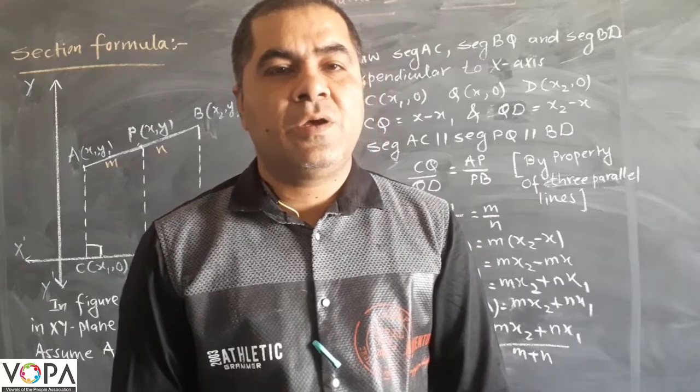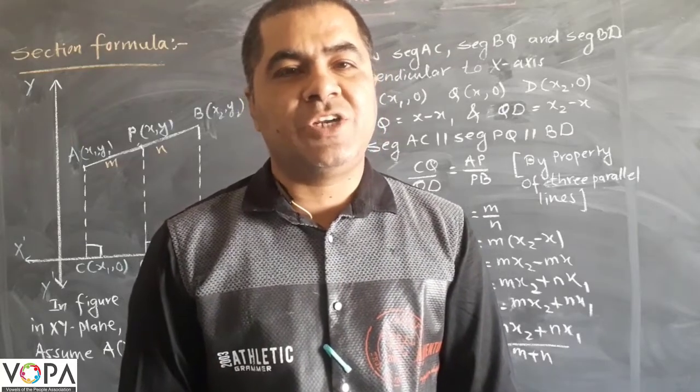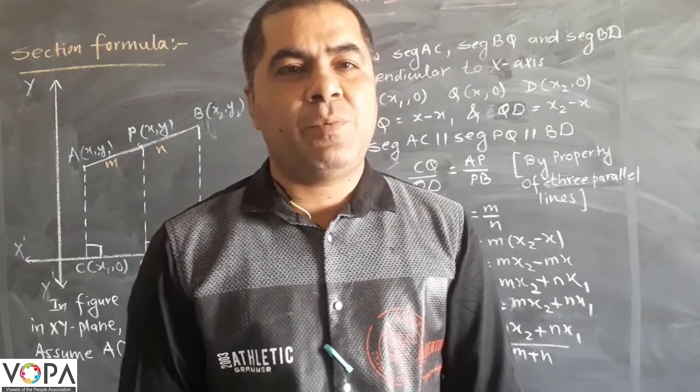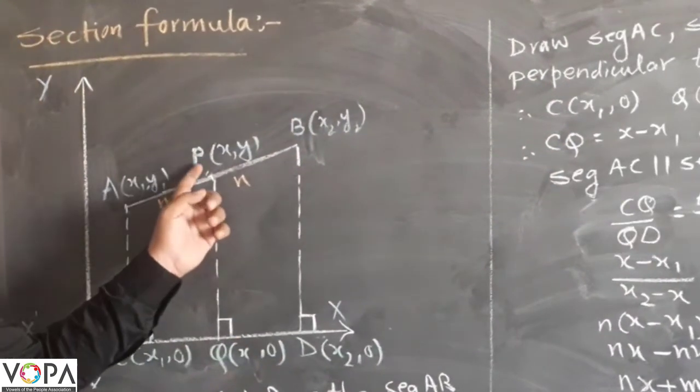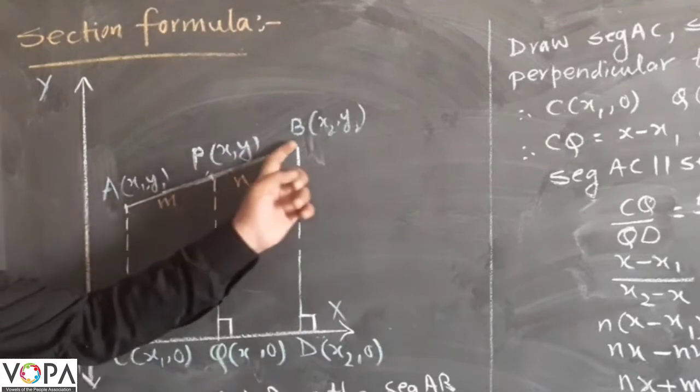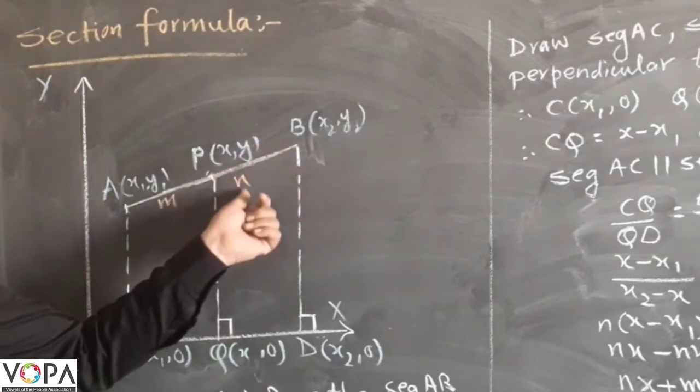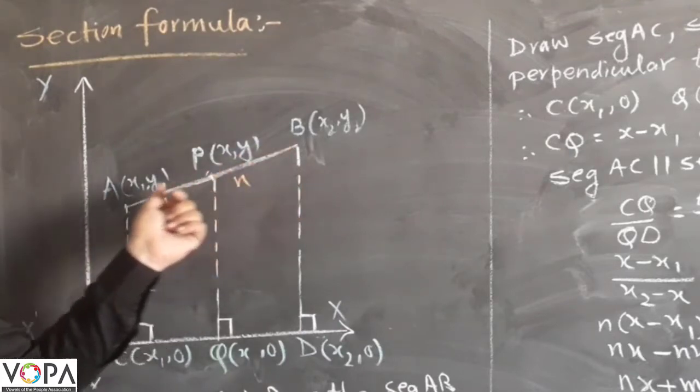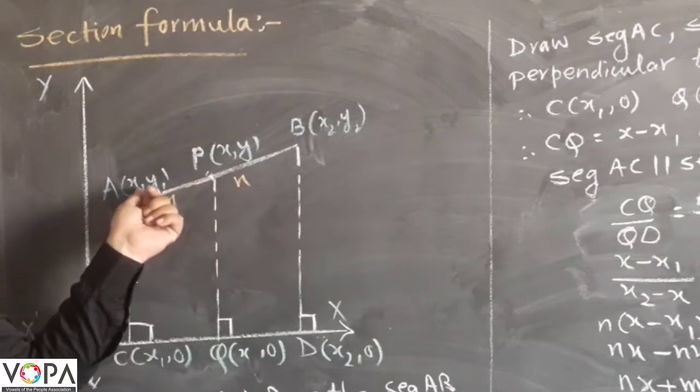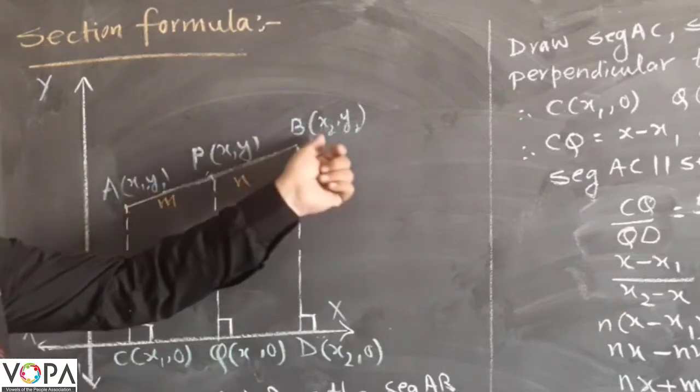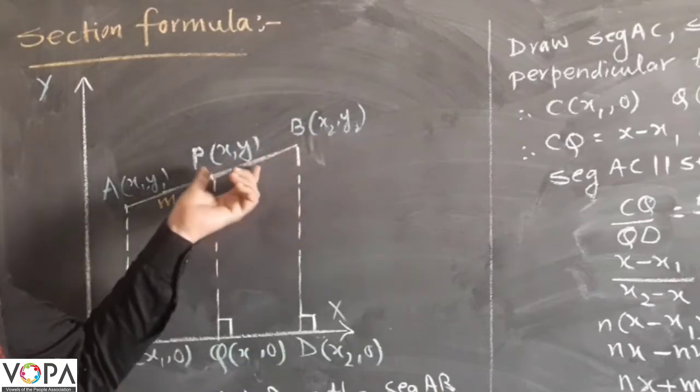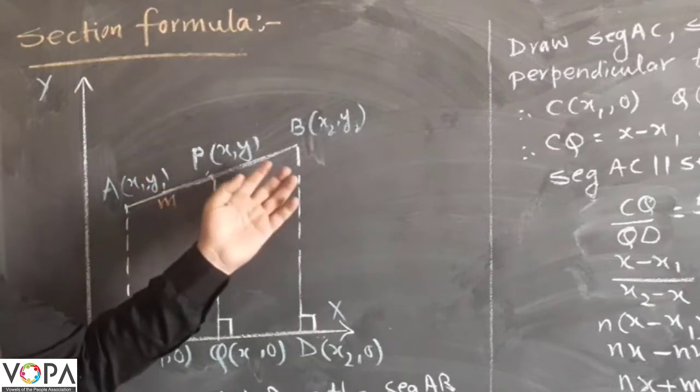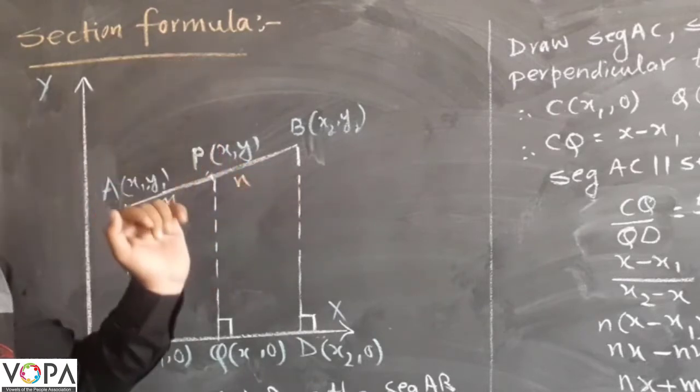Hello dear students, our next topic is section formula. What is section formula? If a point P divides segment AB in ratio M:N, and if we know the coordinates of point A and coordinates of point B, then we can find the coordinates of P using the section formula.